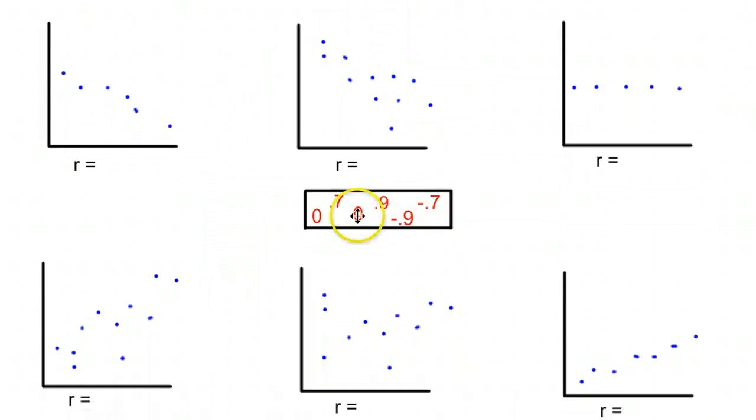Now, looking at all of these here, if we have these choices to pick from, we're going to see an upward trend in this bottom one here, upward trend in this bottom one here. So our positive ones, we have a 0.7 and a 0.9, are going to be between these two. And this one clearly forms a nice line, a nice linear pattern. So we're going to give that the correlation coefficient, r, of 0.9.